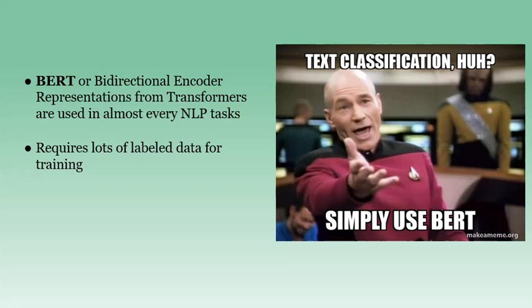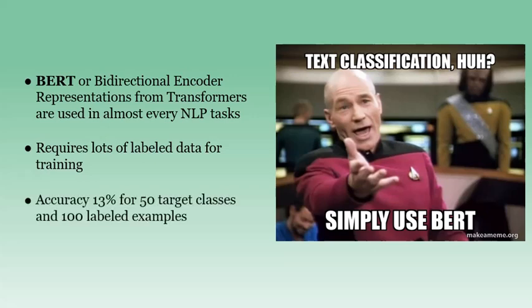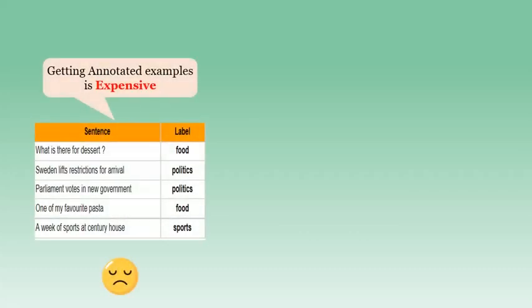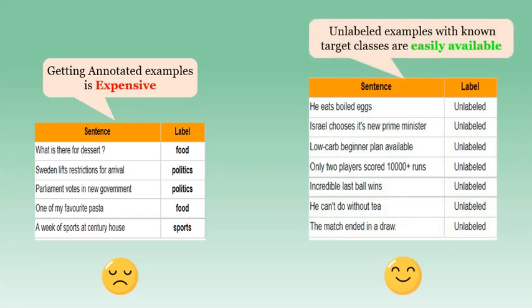In this particular setup, the traditional BERT model got an accuracy of 13% for classifying 50 target classes with only 100 annotated examples — pretty bad, right? In a real scenario, getting expert annotated high-quality labeled examples is very expensive and time-consuming, but in contrast, the unlabeled examples characterizing the target task can be very easily collected.